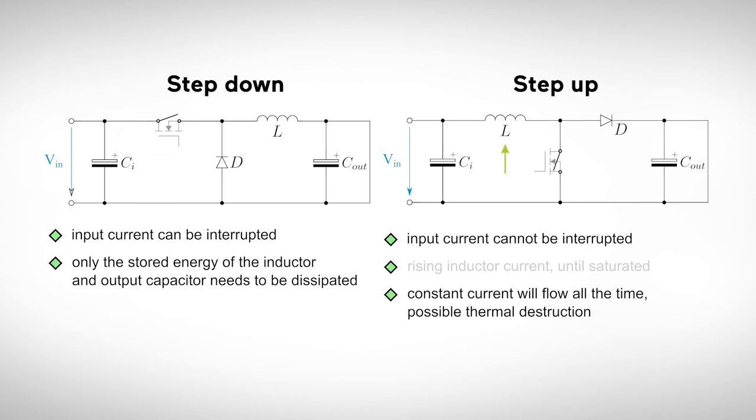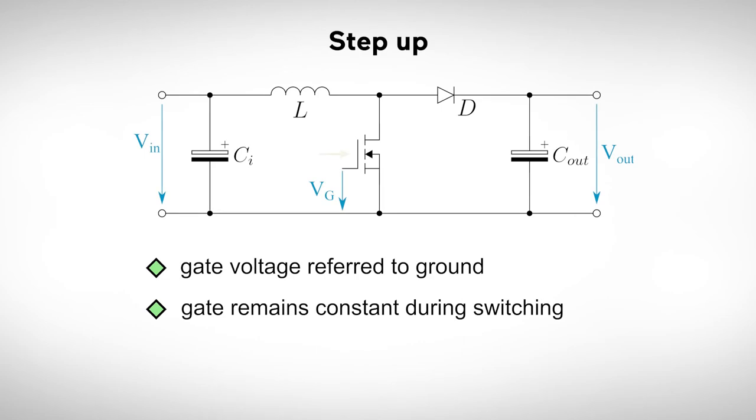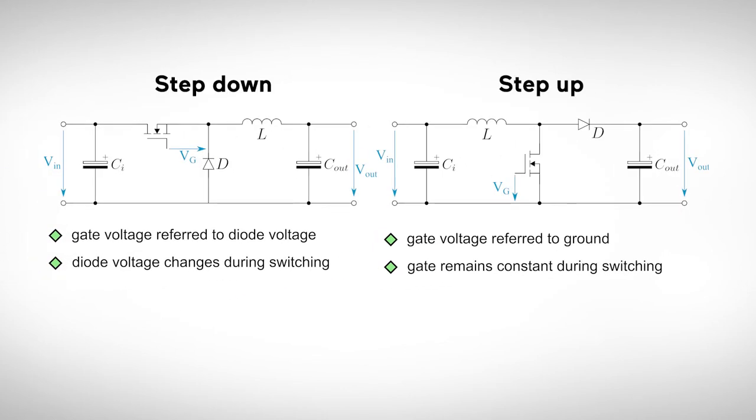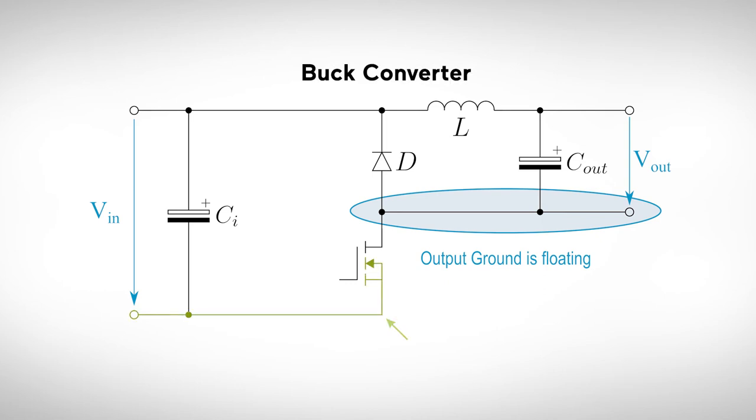If we let the switch on, the output is directly connected to the input and a steady current will flow. Another big issue is the control of the gate of the transistor. For a step-up converter, the gate voltage is referred to ground, which makes control very easy. For the typical step-down converter, the gate is floating, what makes it a little bit tricky to control. But there are also topologies for the buck converter, where the MOSFET is connected to ground. Unfortunately, here we must deal with the problem that the output voltage is no longer referred to the input ground.